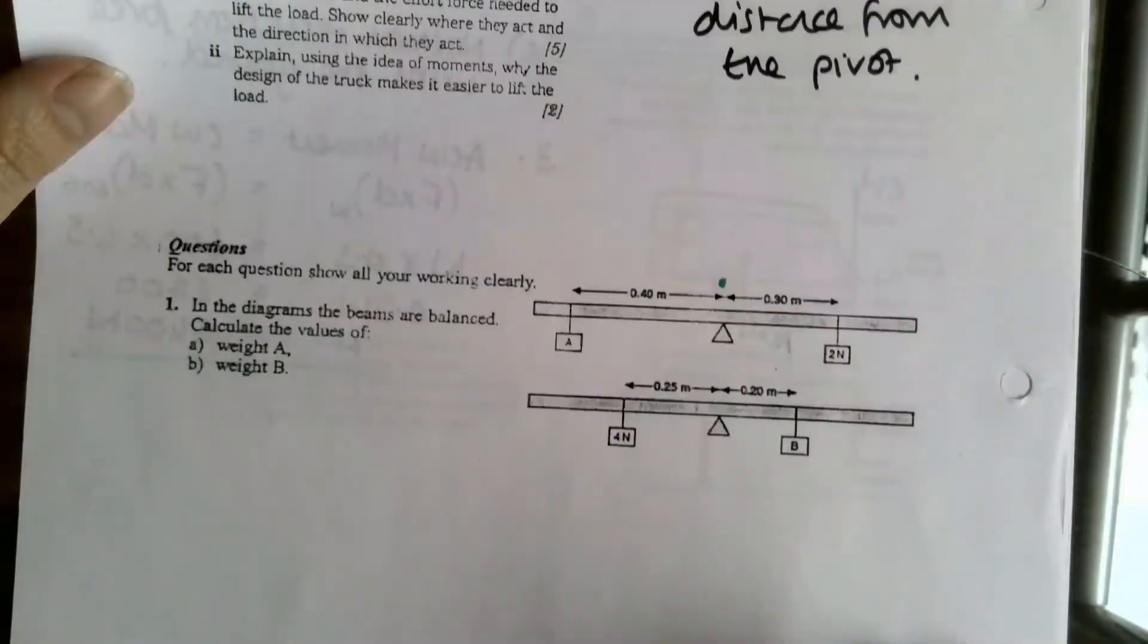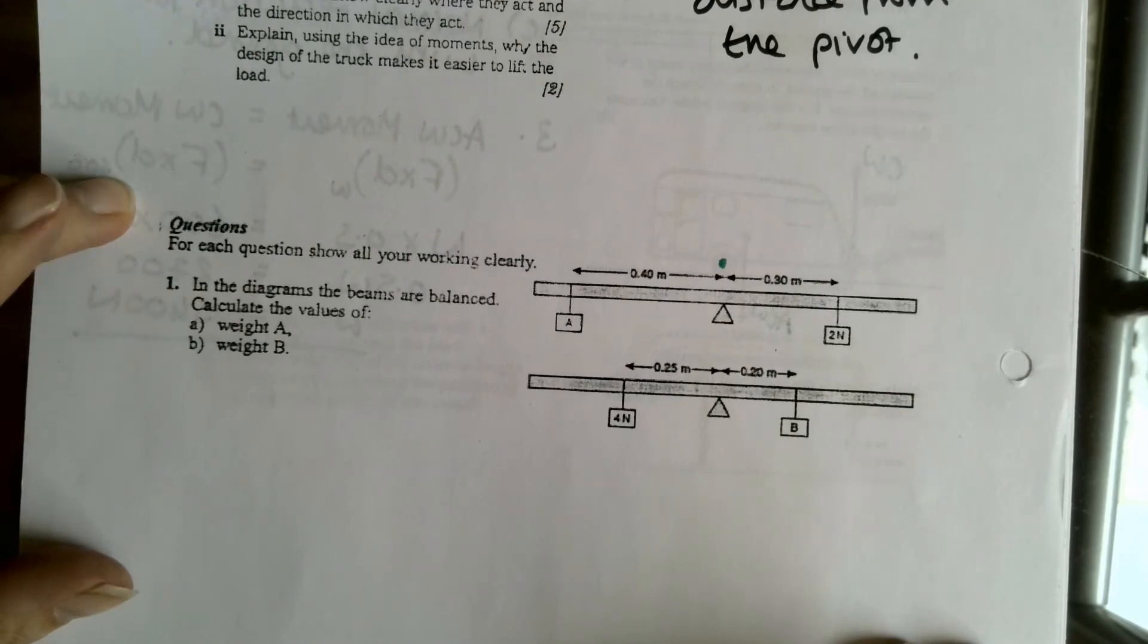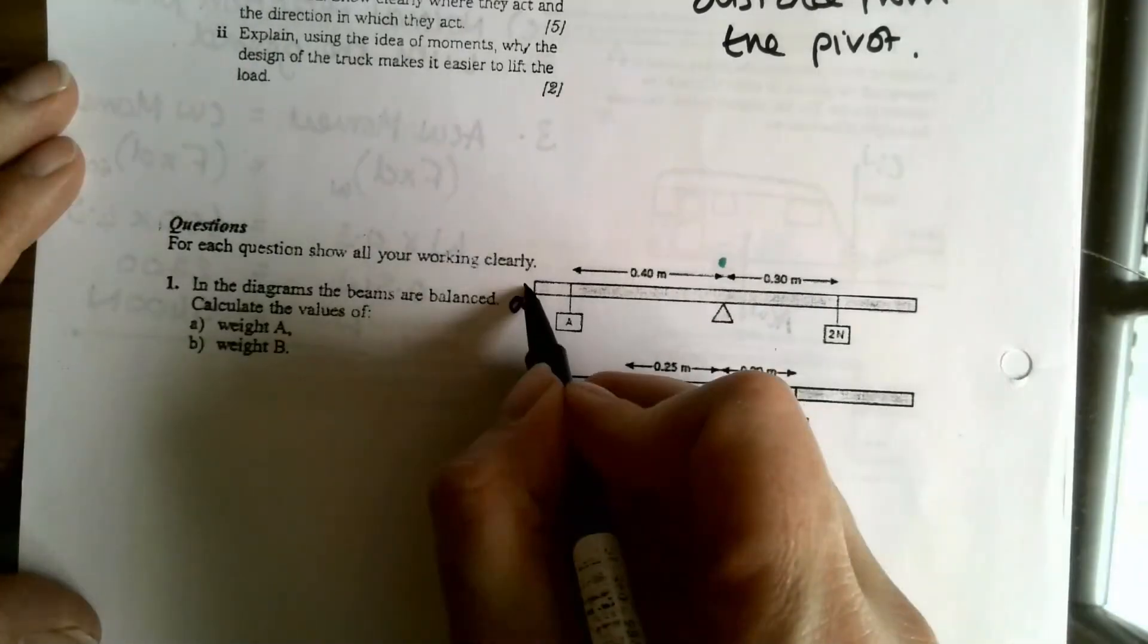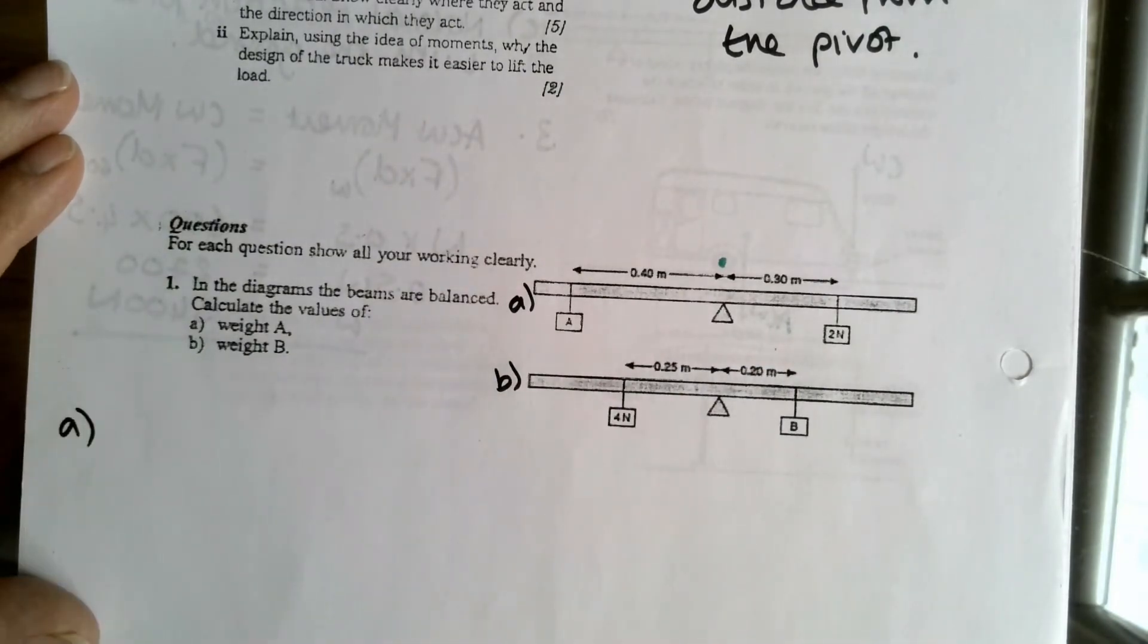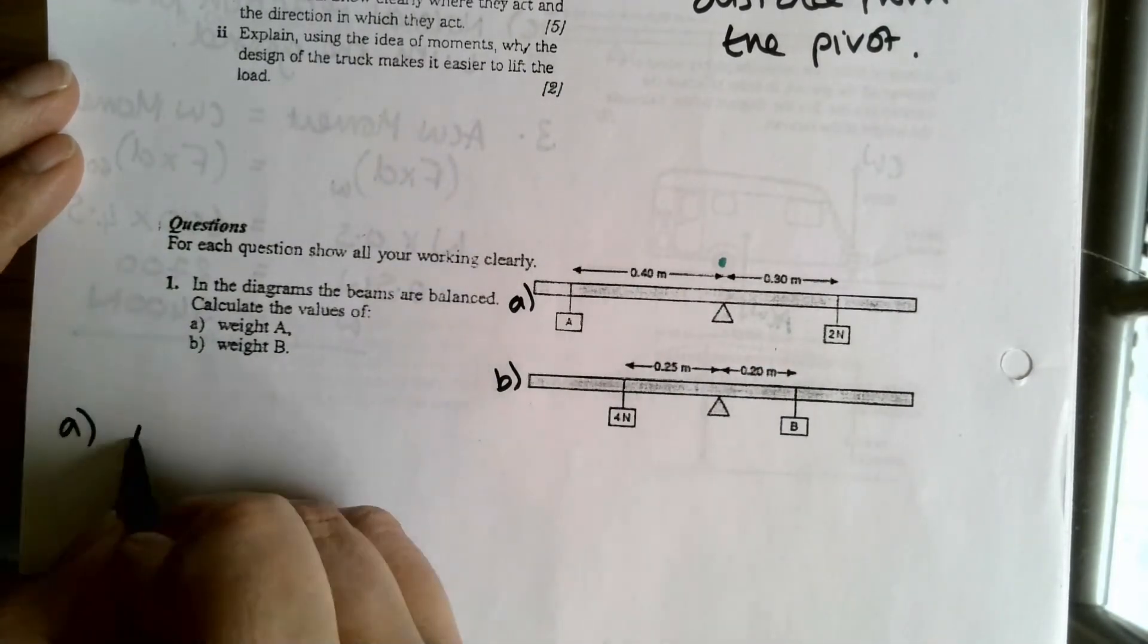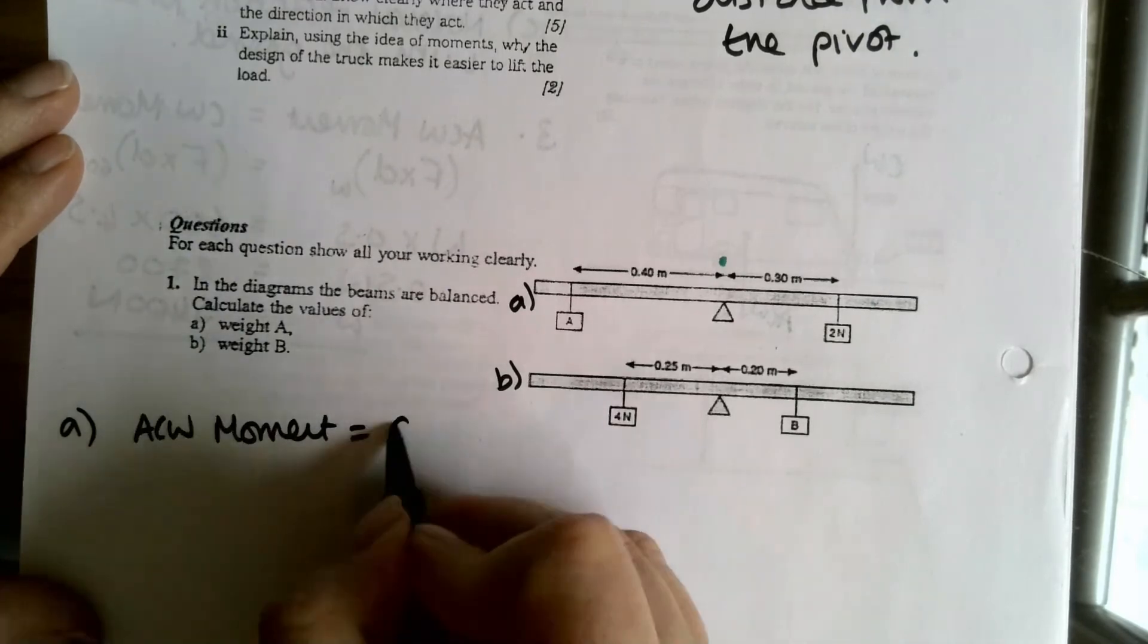This bottom one here. So for each of these calculate weight A and weight B. So I'll call this A and this B. So for A, if they're balanced, anti-clockwise moments are equal to clockwise moments.